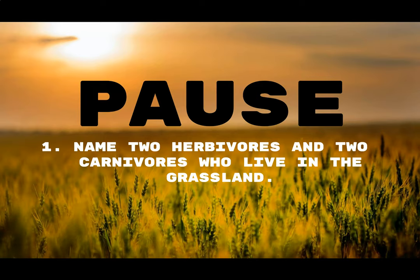Pause your video — it's time for question number one. Go to your Google form and answer: name two herbivores and two carnivores who live in the grassland. For herbivores, you could say anything from small animals like mice and prairie dogs to larger grazing animals like cows, sheep, and horses. For carnivores, birds of prey like hawks or falcons, or hunters like coyotes.